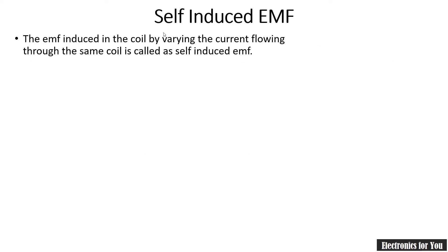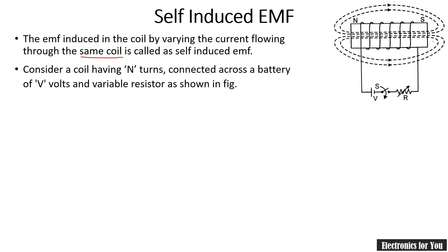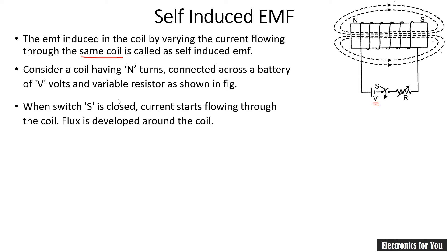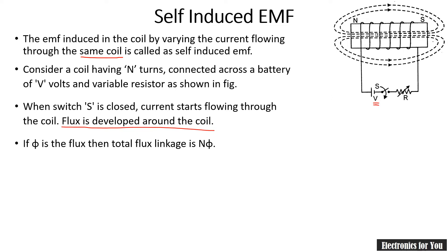Self-induced EMF: the EMF induced in a coil by varying the current flowing through the same coil is called self-induced EMF. Consider this example — a power supply connected to a coil, with a variable resistor R and a switch in series. As soon as we close the switch, current starts flowing through the coil. By Oersted's law, EMF is induced in the coil and flux is developed around it.